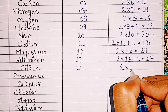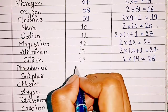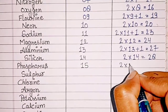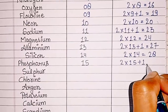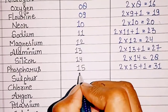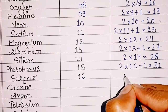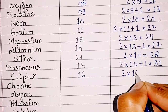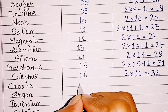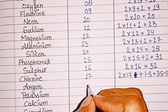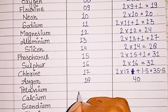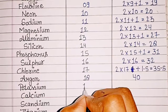Silicon mass number: 2 x 14 = 28. Phosphorus: atomic number 15, mass number 2 x 15 + 1 = 31. Sulfur: atomic number 16, mass number 2 x 16 = 32. Chlorine: atomic number 17.